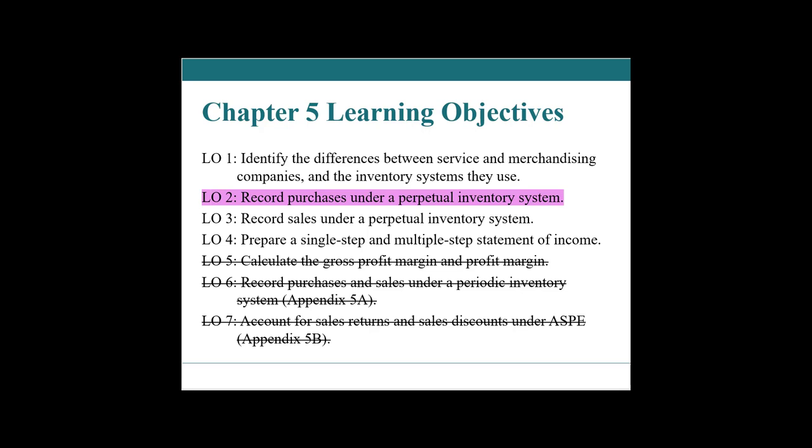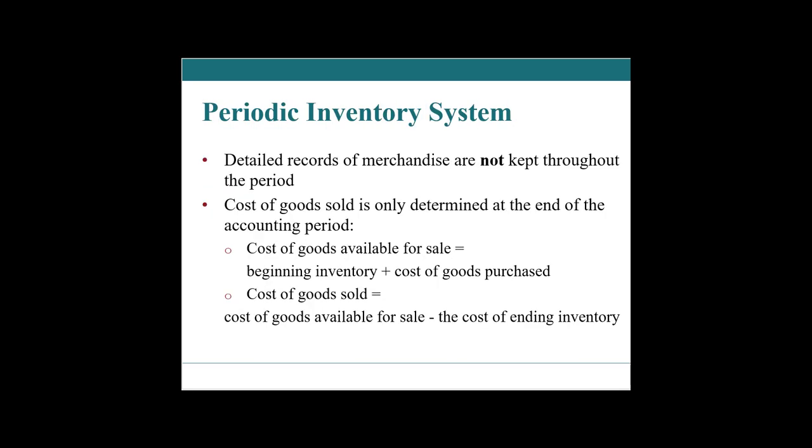First, in order to understand what a perpetual inventory system is, let's talk about a periodic inventory system. Under a periodic inventory system, detailed records of merchandise are not kept throughout the period, so we don't really know what's going on. Cost of goods sold is only determined at the end of the accounting period, once inventory is counted. Cost of goods available for sale equals beginning inventory plus purchases, and cost of goods sold equals cost available for sale minus ending inventory. This method is simpler, though less precise.